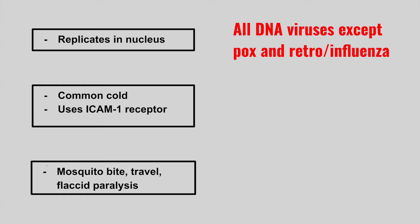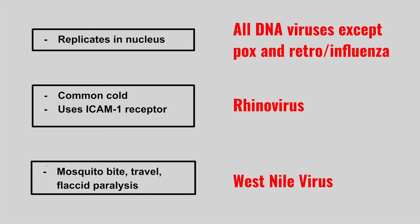Now we want to figure out which virus causes the common cold and uses the ICAM-1 receptor to infect. This is rhinovirus. The next patient is going to have a mosquito bite, a history of travel, and then they get flaccid paralysis. This is West Nile virus.